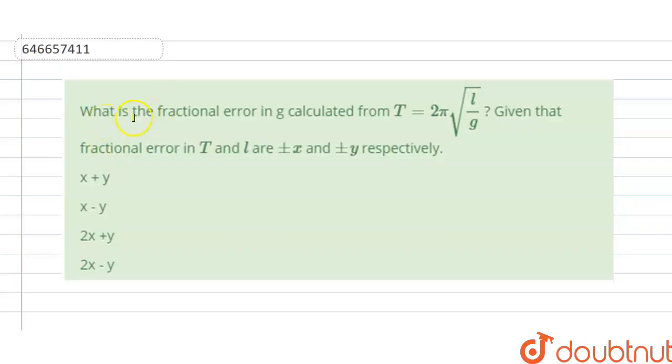Hello students, today our question is what is the fractional error in G calculated from T time period that is 2π√(L/G), and this is G that is acceleration due to gravity and this is in under root.